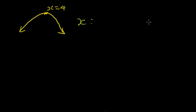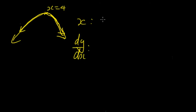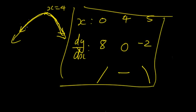It doesn't matter what points you pick. We could have used x = 0, 4, and 5 instead of 3, 4, and 5. At x = 4, dy/dx = 0. At x = 0, dy/dx = 8, which is positive. At x = 5, dy/dx = -2. So the sign pattern is positive, zero, negative — even with different points we get the same answer. Therefore, this is a local maximum stationary point.